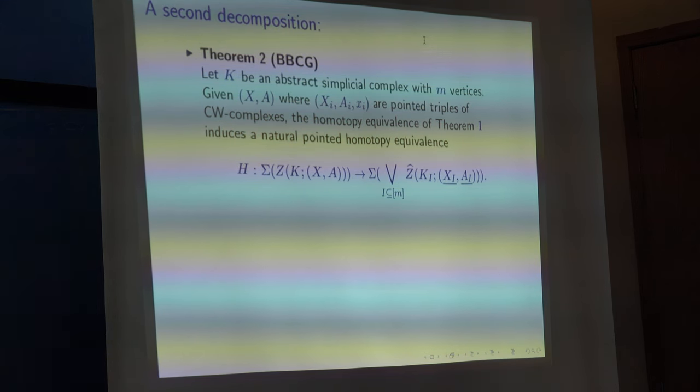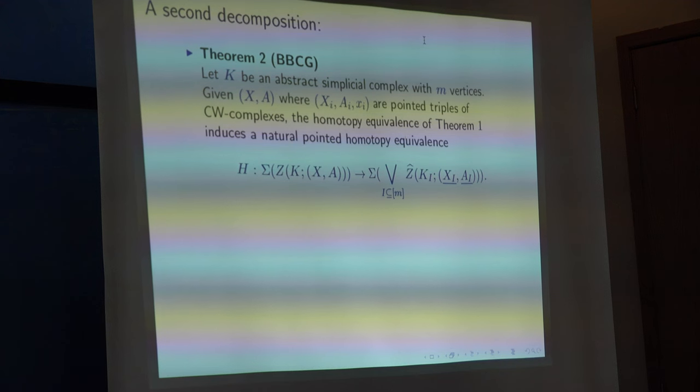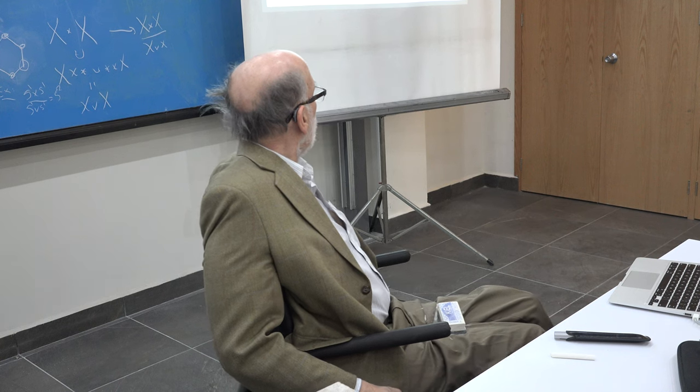Now, this is what got Sam, Tony, Martin, and myself started. We were wondering whether these spaces ZK, again, could be studied more easily in some other context. And, well, the answer turned out to be yes, that ZK, ZK of XA looks like a wedge of polyhedral smash products for full subcomplexes of K. And now if you know the full subcomplexes, you have a good handle on taking apart the polyhedral product.